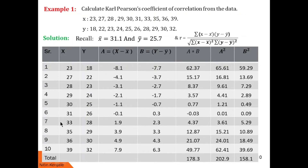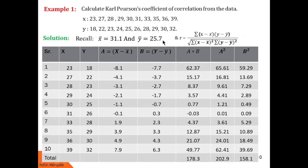Now let us substitute the values for x and y. For column A: x minus x bar gives 23 minus 31.1 equals minus 8.1; 27 minus 31.1 equals minus 4.1, and so on for further values. For column B: y minus y bar gives 18 minus 25.7 equals minus 7.7; 22 minus 25.7 equals minus 3.7, and so on.